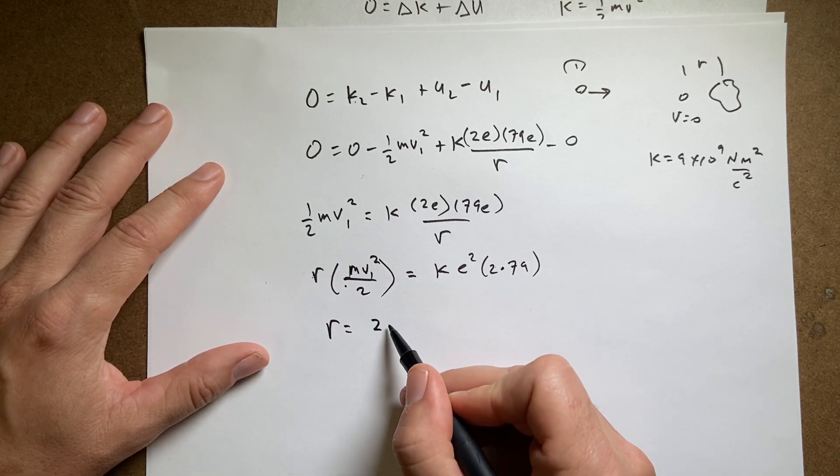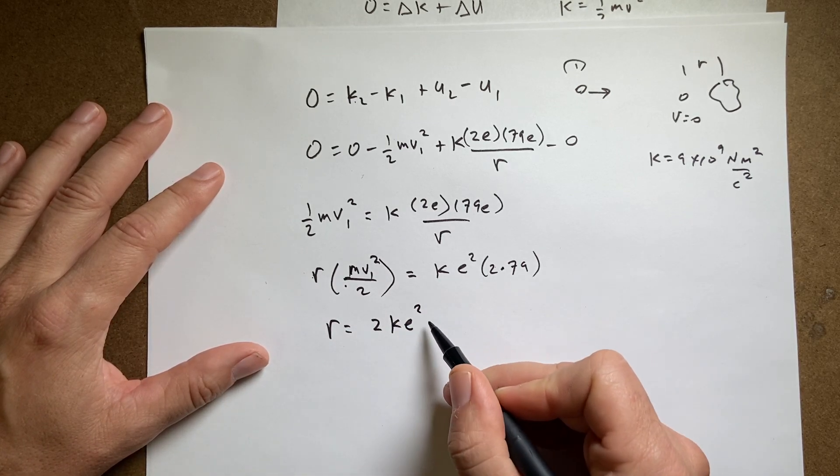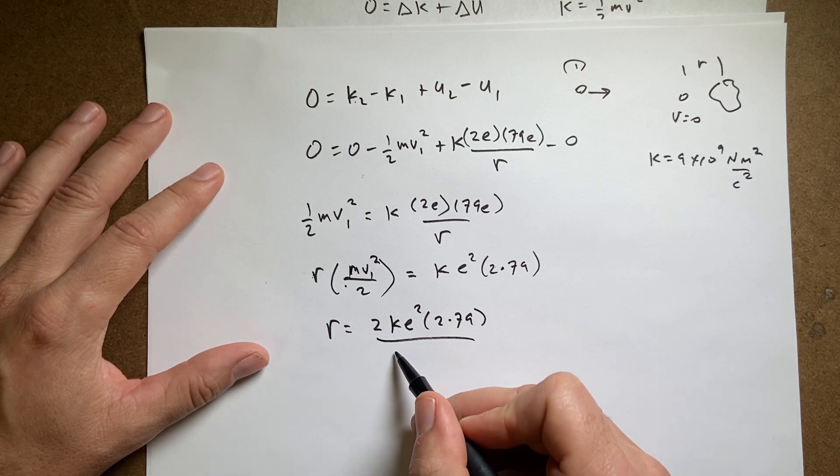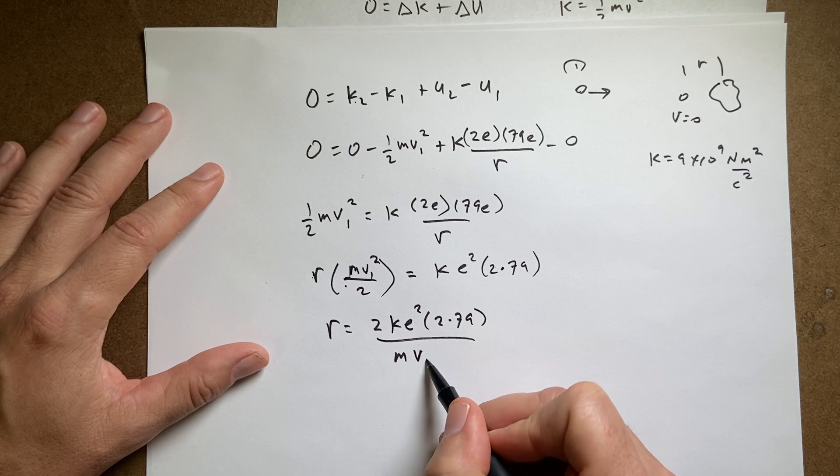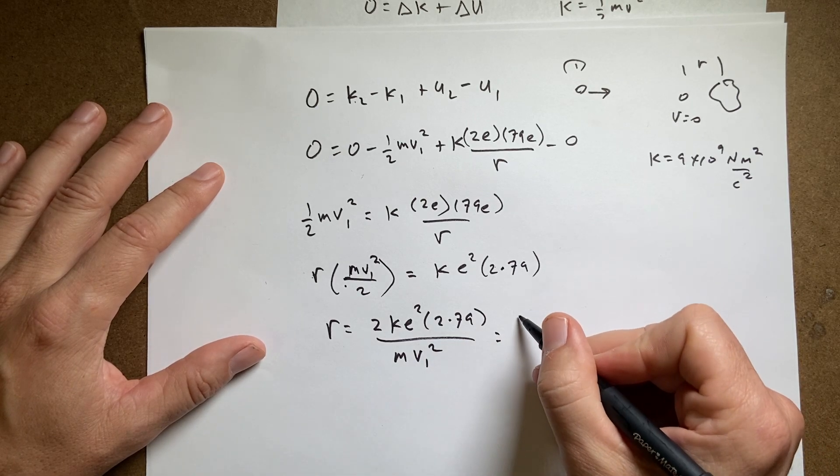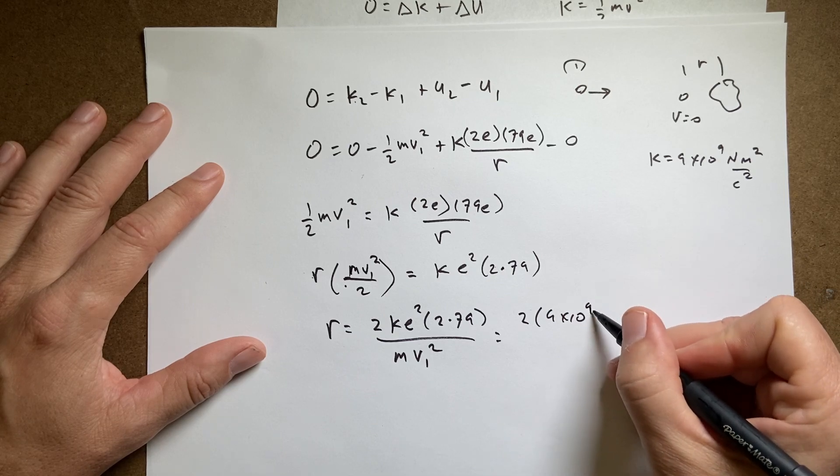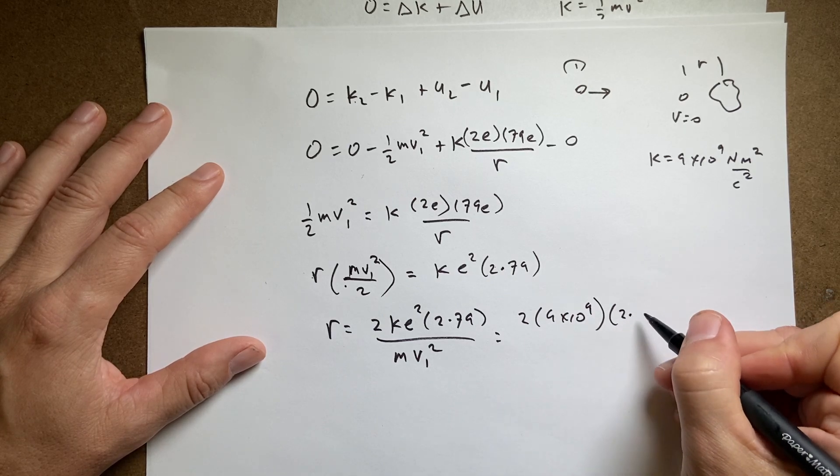And I get r equals 2ke squared times 2 times 79, all of that over mv1 squared. So if I put in my numbers, I get 2, 9 times 10 to the 9th, 2, 79.